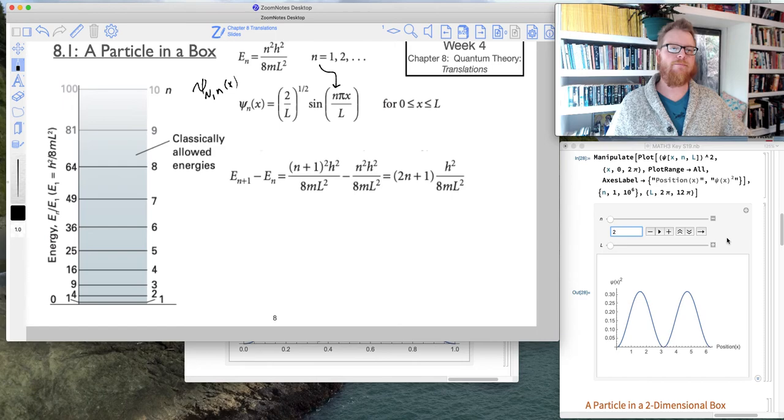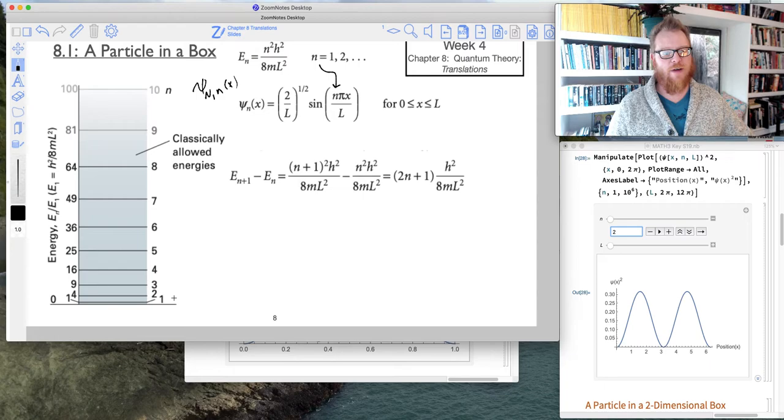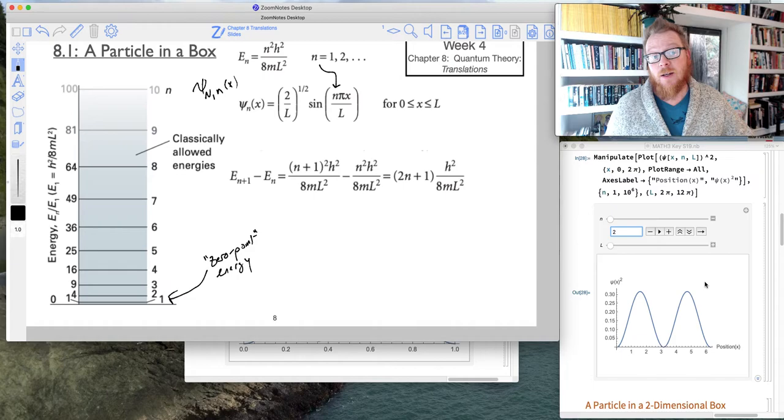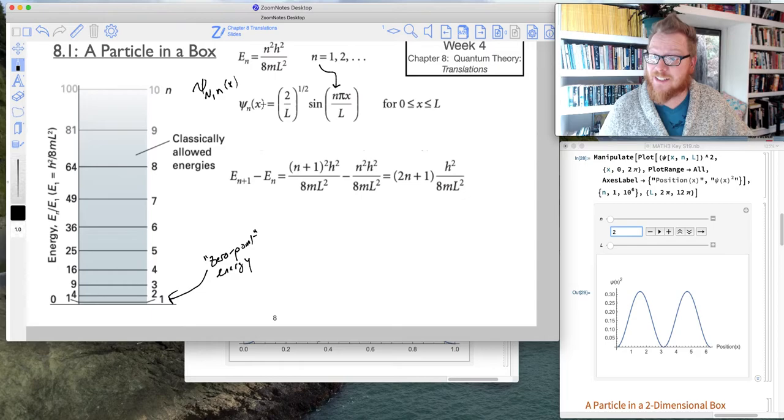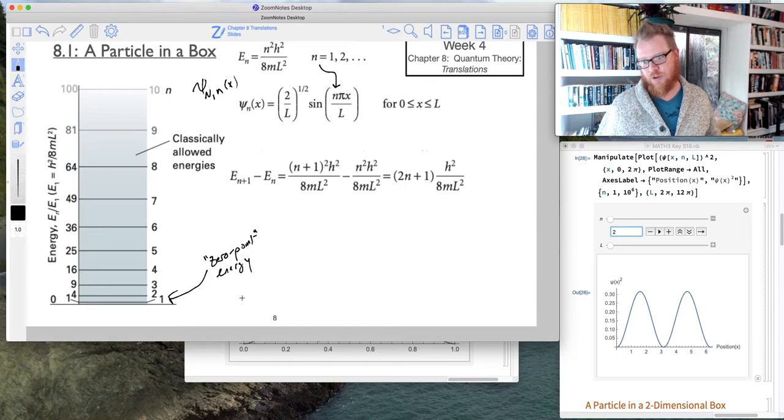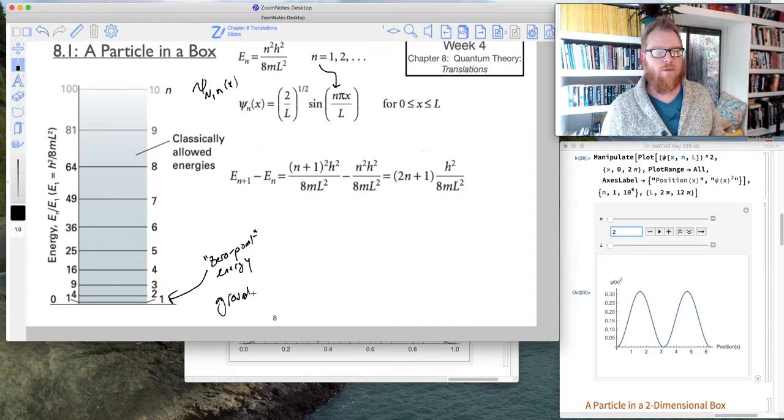So we note that energy goes up by the square, and you can see here are these values of n. When n is 1, it's just h squared over 8mL squared. We call that energy level the zero point energy. Because as it turns out, there's no temperature in this equation. So what that means is, even at zero Kelvin, we would still have this zero point energy. So it's our ground state.